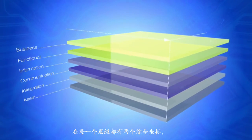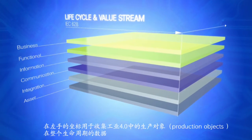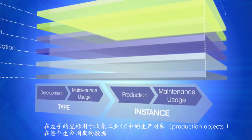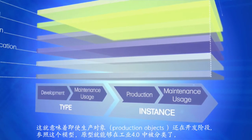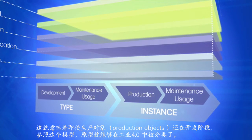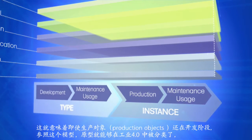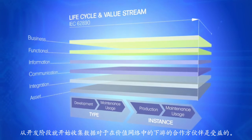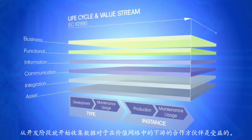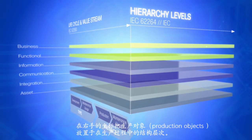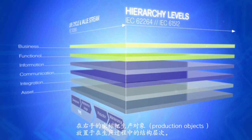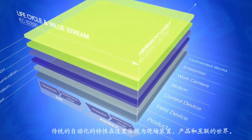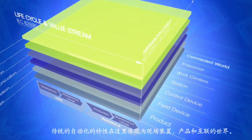There are two horizontal axes along each of the layers. The left-hand axis is used to map the data acquisition along the entire lifecycle of production objects in Industrie 4.0. This means that even objects still under development, referred to as types, can be classified in RAMI 4.0. The right-hand axis portrays the production objects based on hierarchy levels in production. The traditional automation pyramid has been supplemented by the levels field device, product, and connected world.